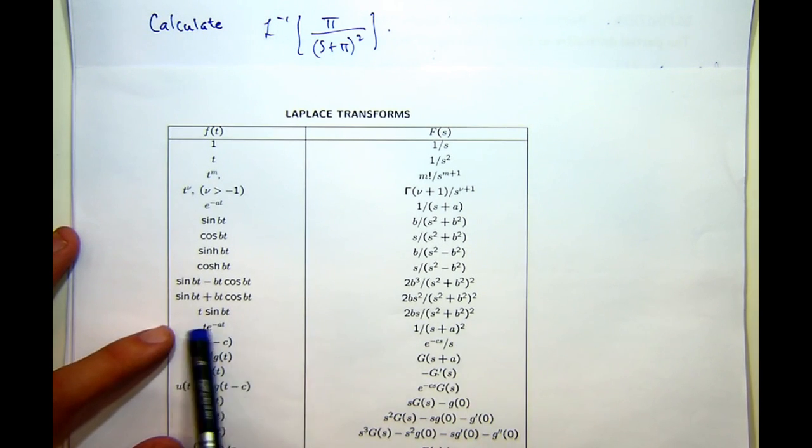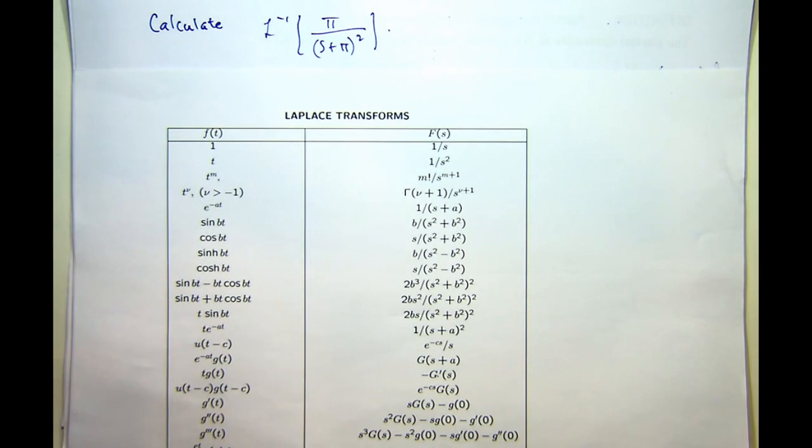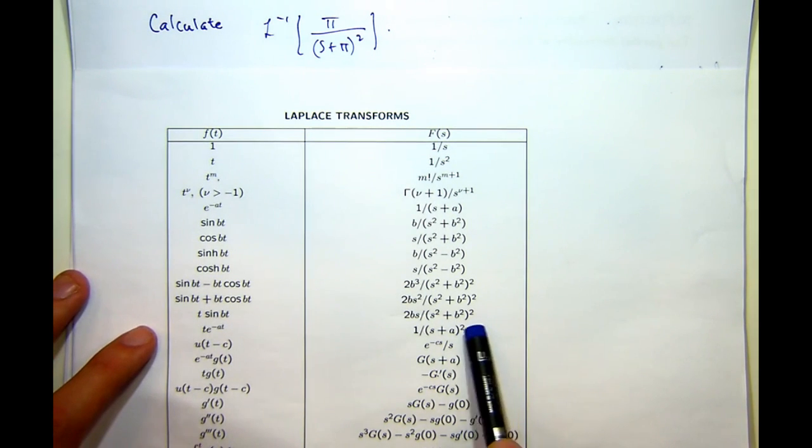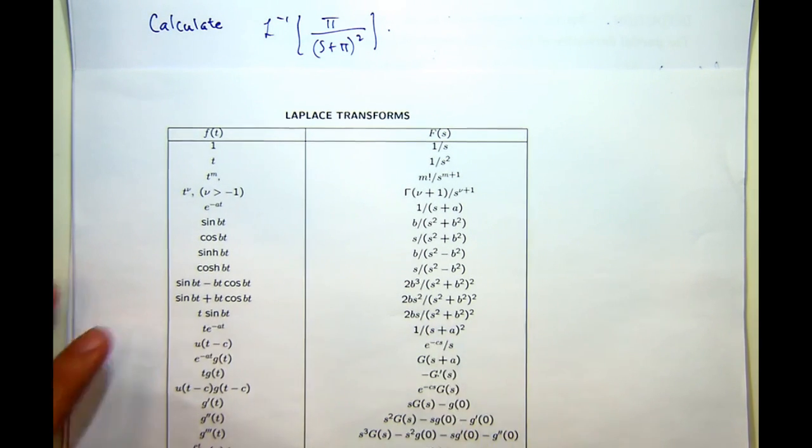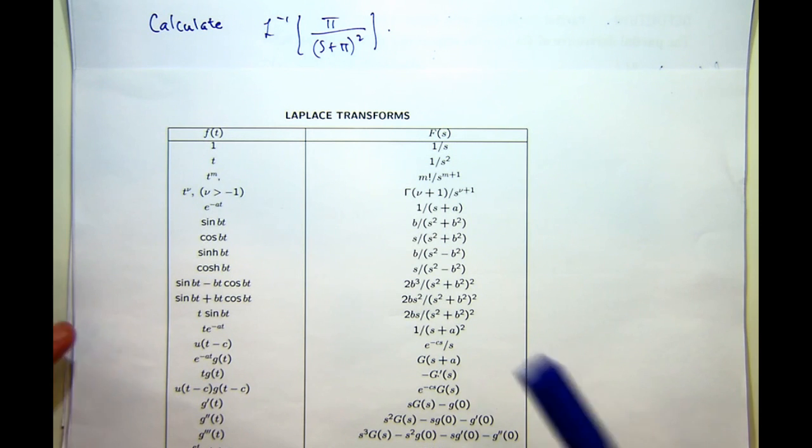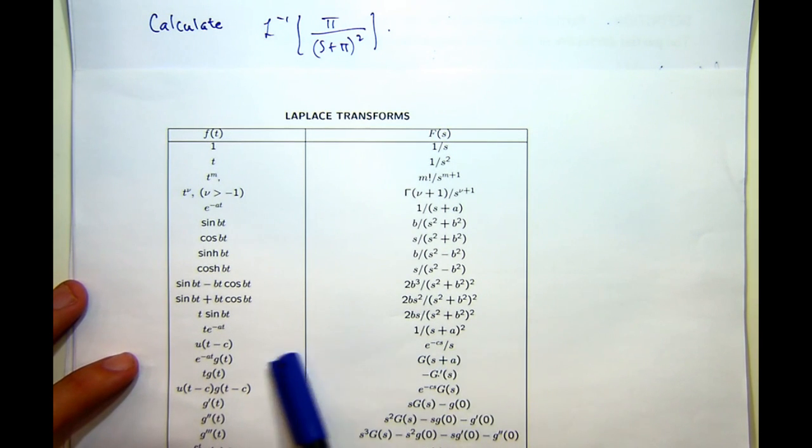Now, this particular entry may or may not be in your table. If you're working from a small table, I would bet that this particular one isn't actually in your table. So I'm going to show you how to do this using the first shifting theorem, which is here.